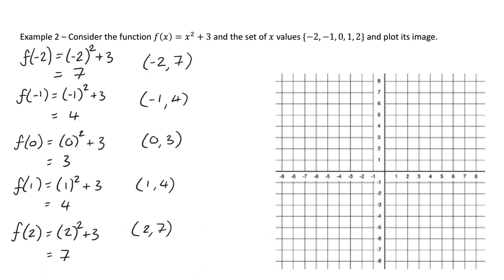I'm going to go to my set of axes and I'm going to plot the coordinates. So I've got negative 2, 7, negative 1, 4, 0, 3, 1, 4 and 2, 7. And then I'm going to connect them up in order. And we get the shape of a parabola, which we will come back to in future lessons. So remember that word, parabola.